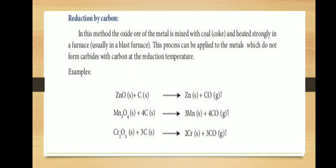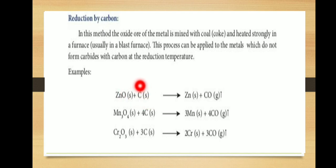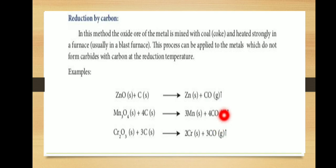Reduction by carbon: in this method, the oxide ore of the metal is mixed with coal (carbon) and heated strongly in a furnace. This process can be applied to metals which do not form carbides with carbon at the reduction temperature. For example, zinc oxide, manganese oxide, and chromium oxide are mixed with carbon and heated to form the respective metals with removal of carbon monoxide.